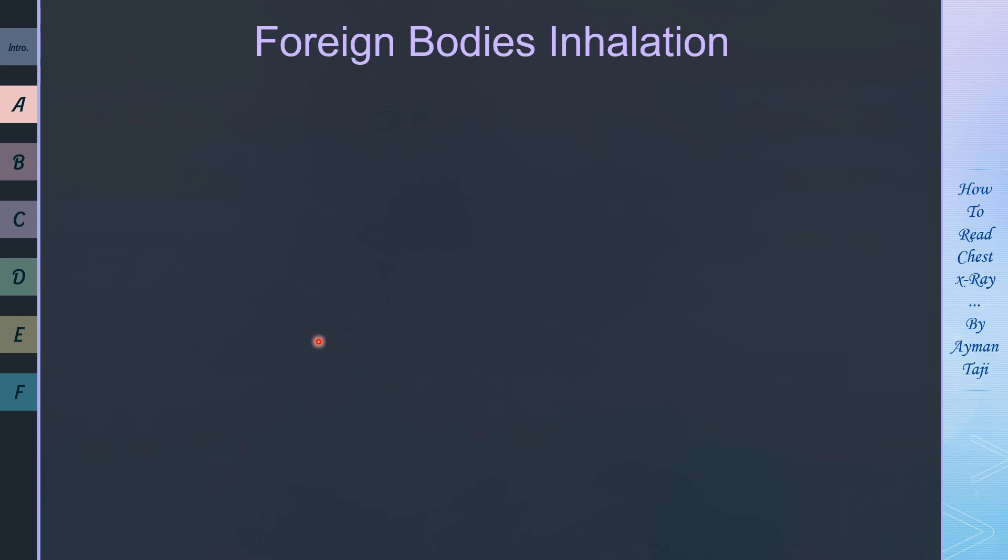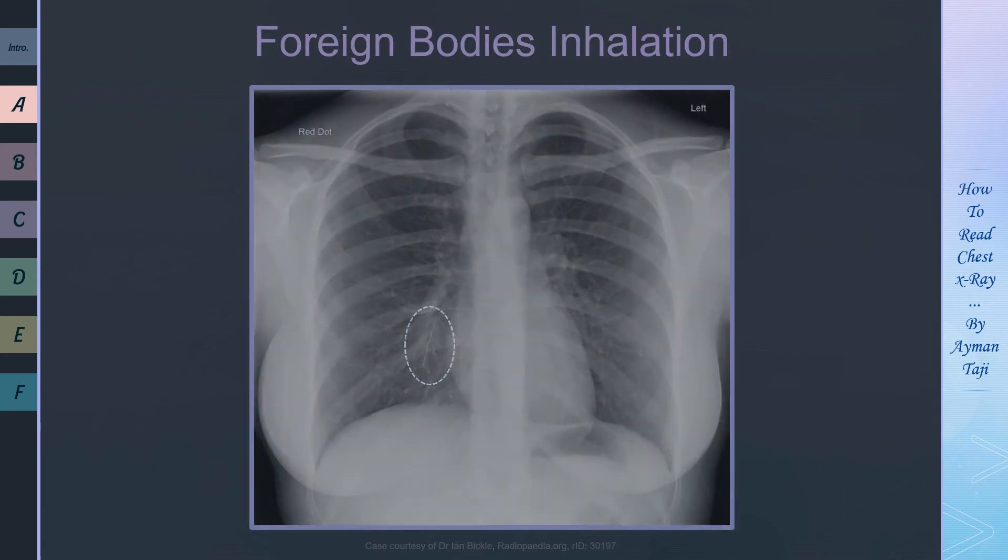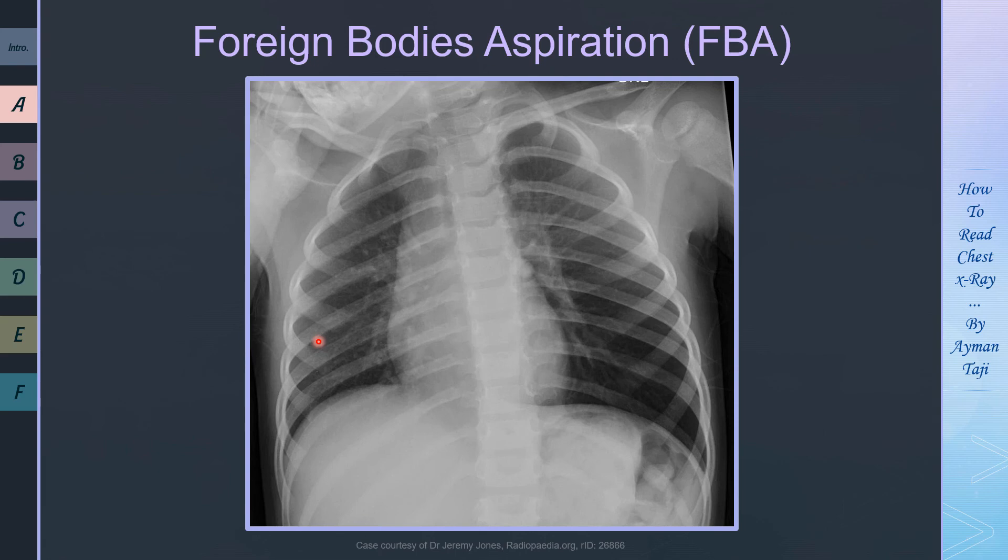Sometimes this foreign body is visible on a simple chest X-ray like this pin here, but sometimes it's not visible, as in this case here in which an 18-month-old baby had acute onset of respiratory distress while playing in the front yard. So the history is very suggestive of foreign body aspiration, right? And on examination you notice a unilateral diminished breath sounds with inspiratory wheezing.